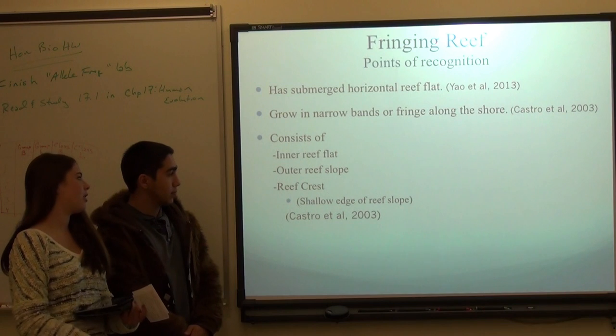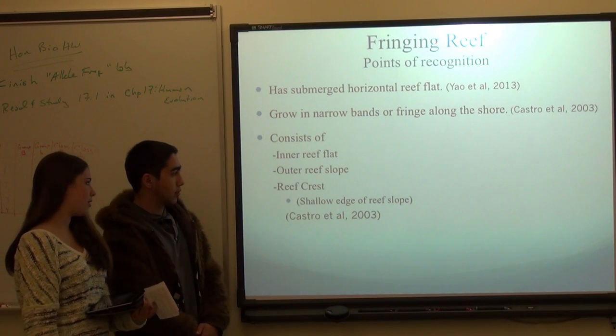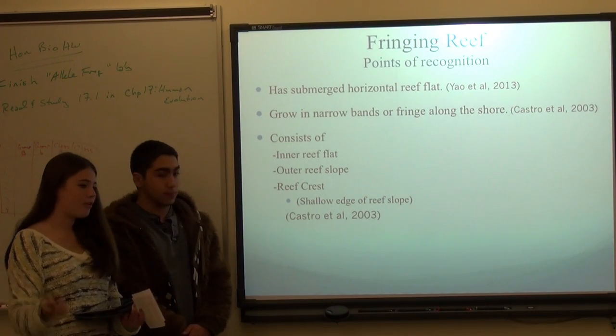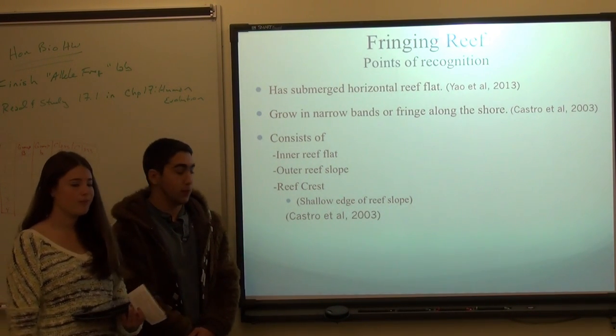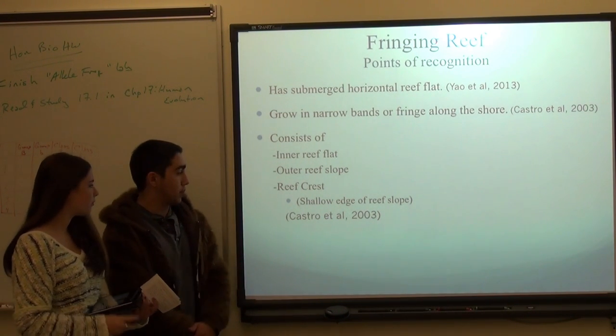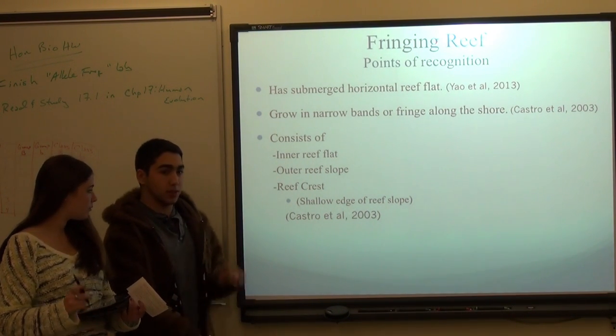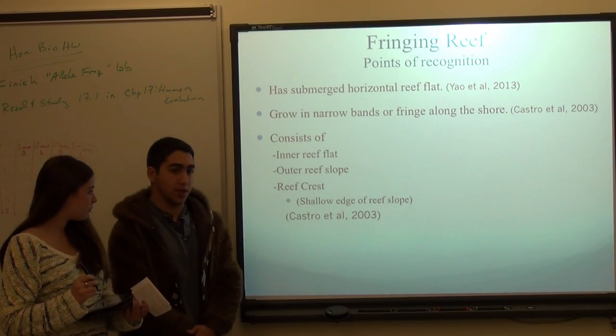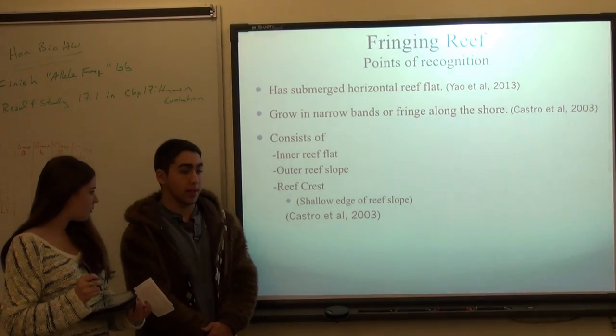Normally, the inner and outer are just referred to as reef flat or reef slope. The reef crest is the part of the reef that's closest to the surface and also gets the most sunlight.